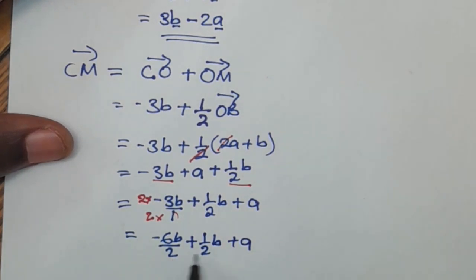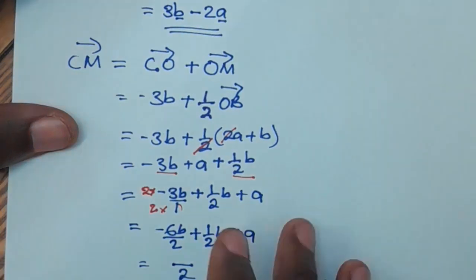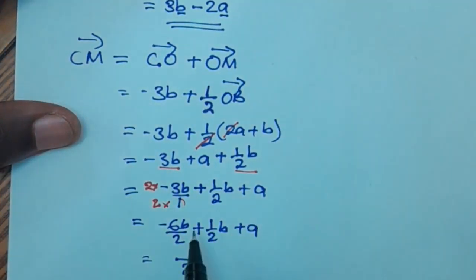Then since we have the same denominators, it means that we can maintain one denominator and add the numerators. So negative 6b plus b will be negative 5b plus a.